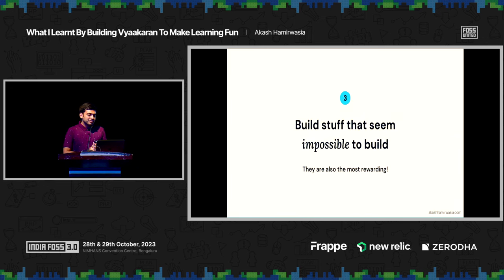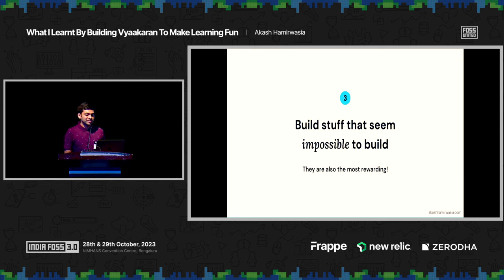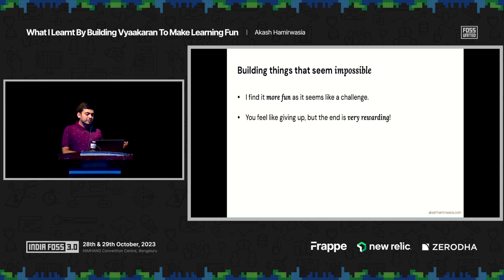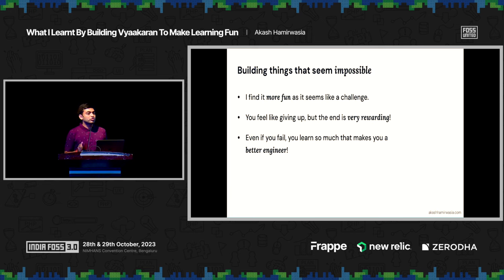The third learning is: go ahead and build stuff that seems impossible to build. We always hear people say start small, don't start with a very big project. But once you've crossed a certain level of confidence, it's much more rewarding to build a project you think is impossible. I find it more fun as a challenge — if there's something I feel I can't build, I want to try to prove that notion wrong. You might feel like giving up, but the end is very rewarding. Even if you fail, it makes you a better engineer — you would have already learned so much before deciding to give up, and that itself prepares you for future projects. If you succeed, it gives you confidence to pick up other harder projects.